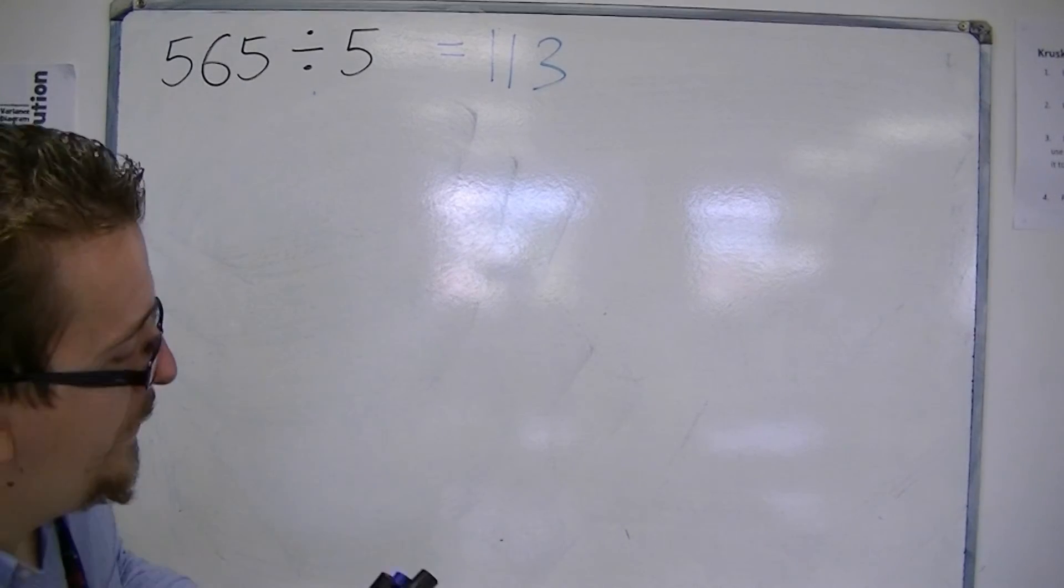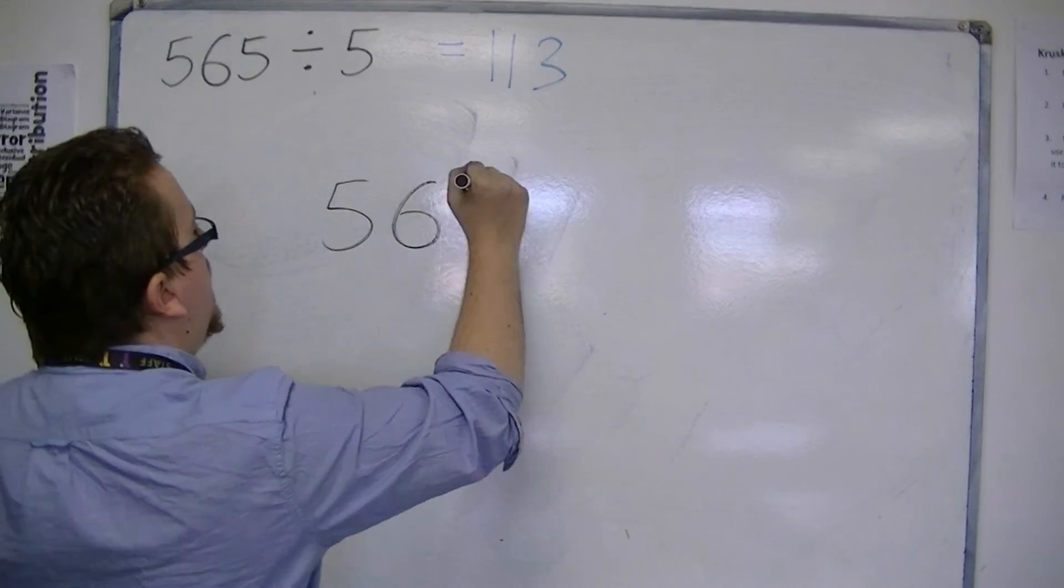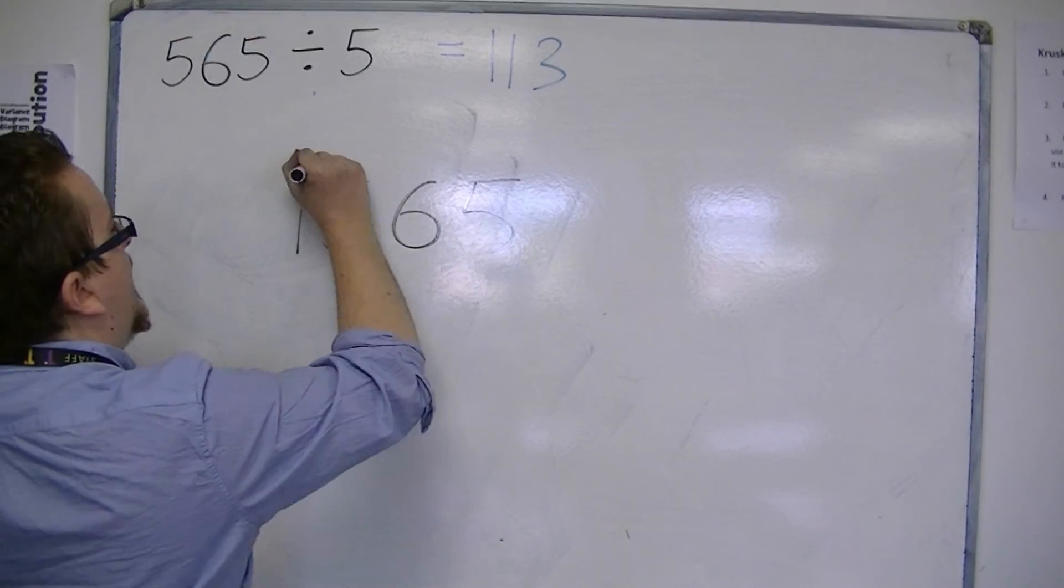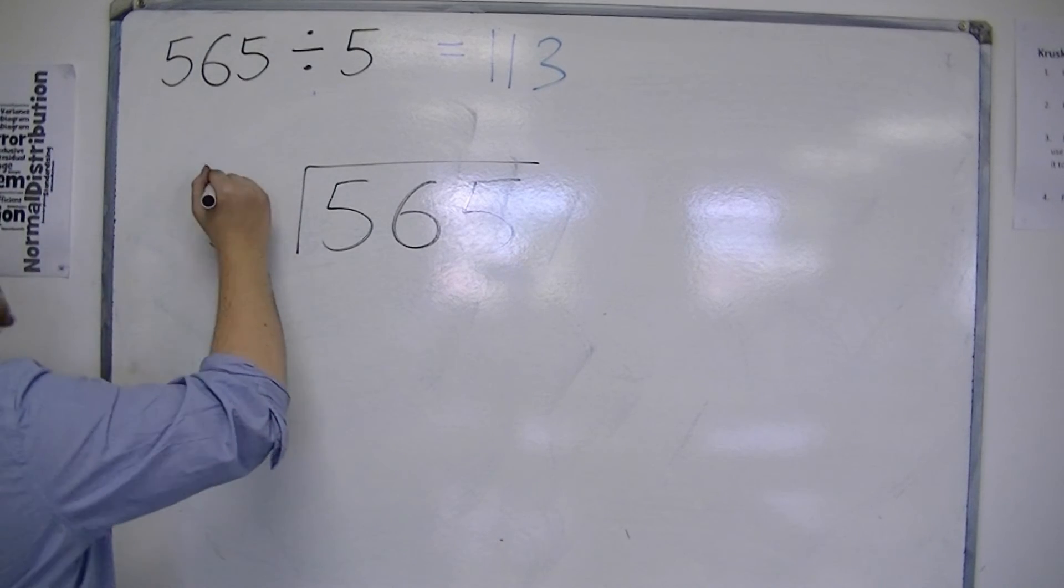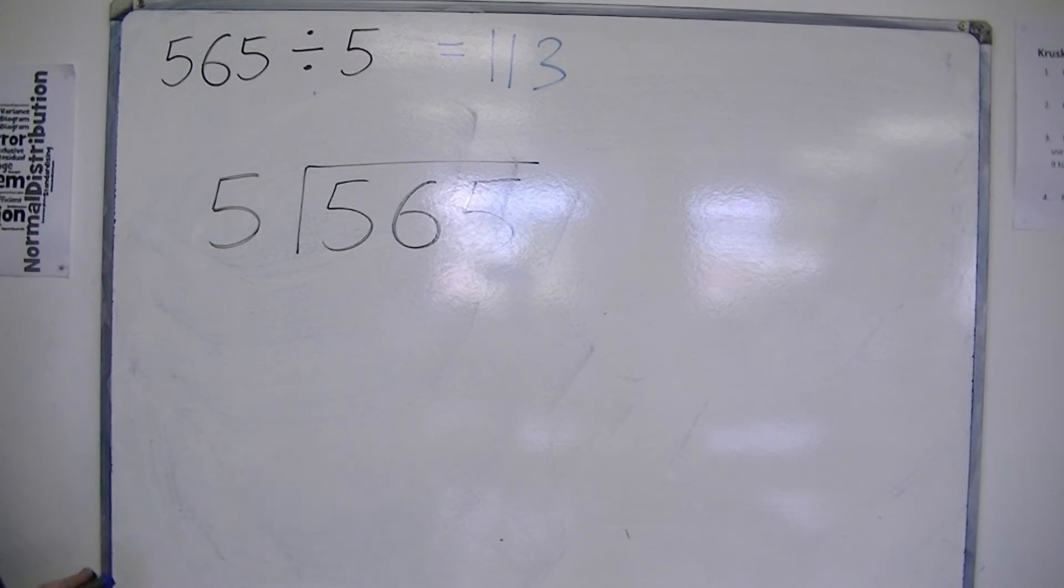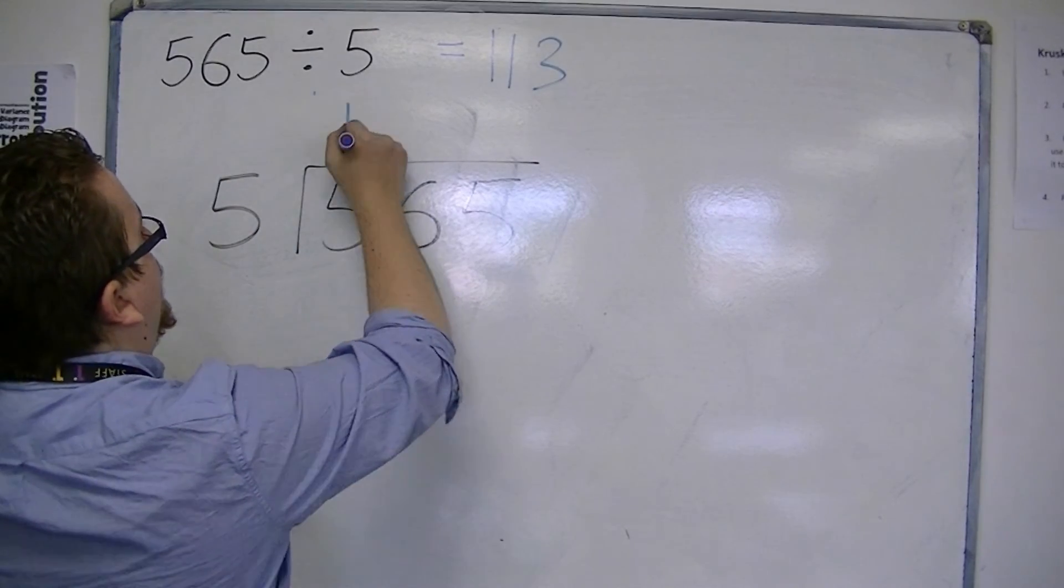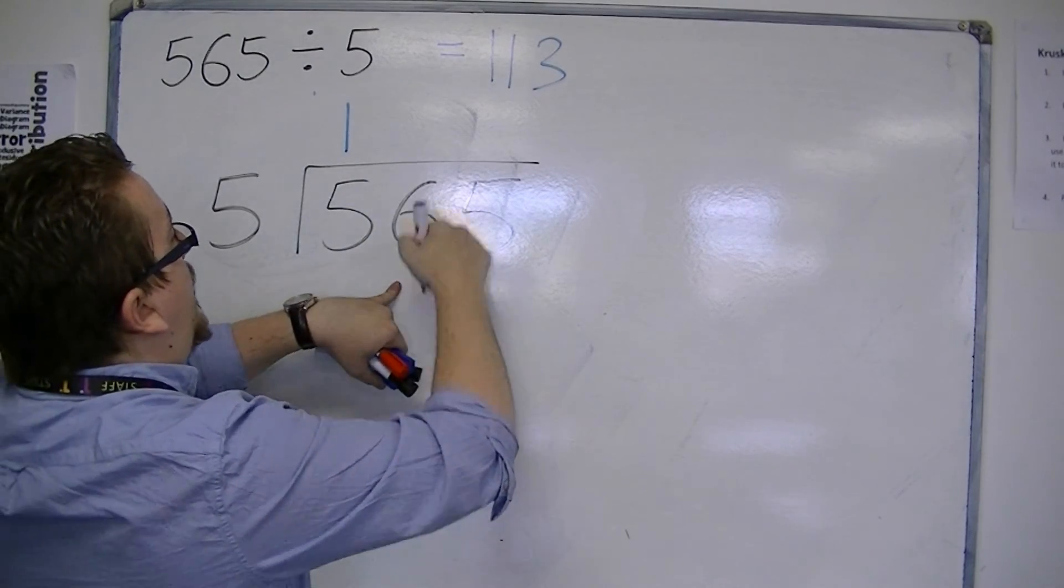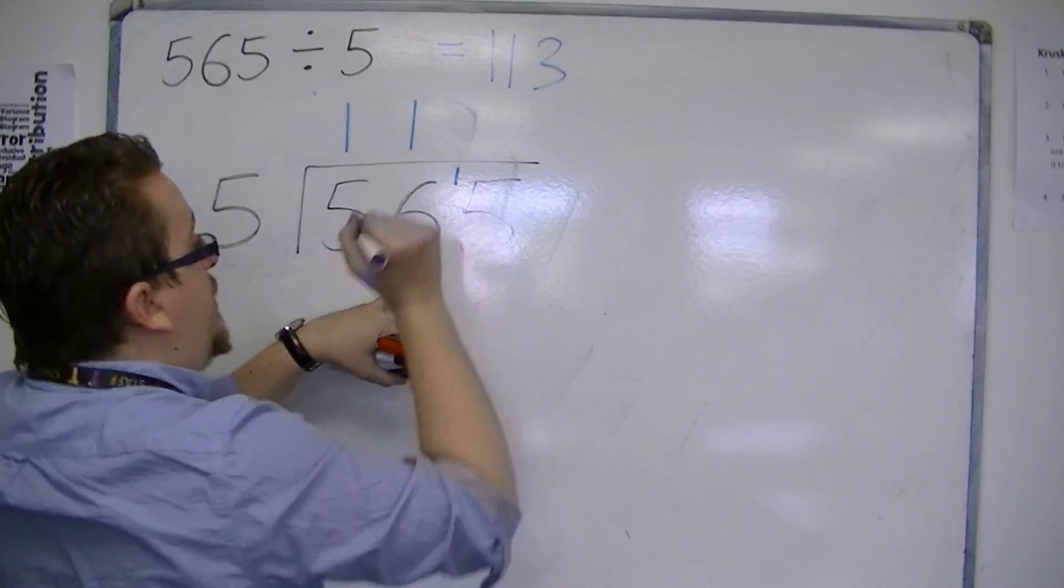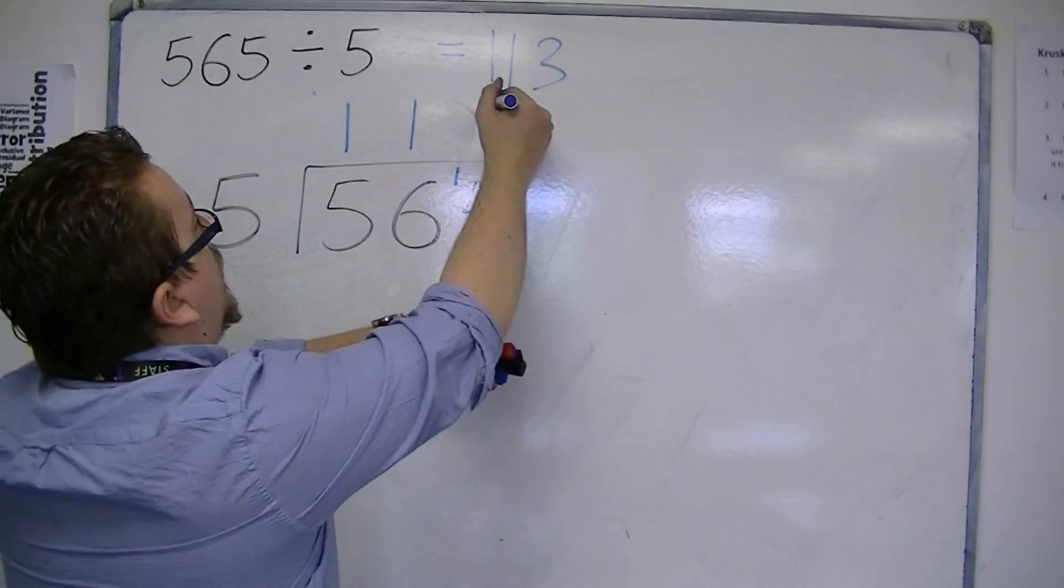Short division looks very similar, and in fact is using all the same calculations, but some of them you just do in your head. So, working from the left to the right, fives into five goes once. Fives into six goes once, remainder 1. Fives into fifteen go 3.